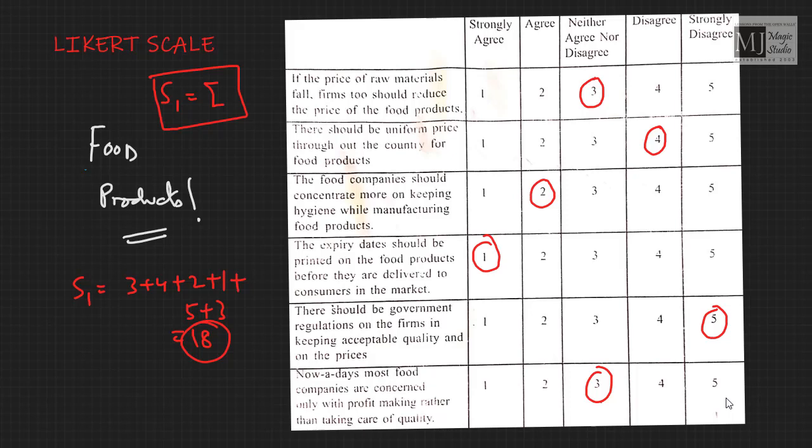Hence, the basic disadvantage of the Likert scale is that it is difficult to know what a single summed score means. Many patterns of response to the various statements can produce the same total score, making interpretation challenging.